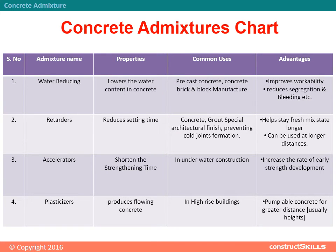Concrete admixtures chart summary: 1. Water reducing admixture — lowers water content, used for precast concrete and brick/block manufacture, improves workability, reduces segregation and bleeding. 2. Retarders — reduce setting time, used for grout and special architectural finishes, prevent cold joint formation, extend fresh mix state for longer transport. 3. Accelerators — shorten strengthening time, used in underwater construction, increase rate of early strength development. 4. Plasticizers — produce flowing concrete, used for high-rise buildings and pumpable concrete over greater distances.